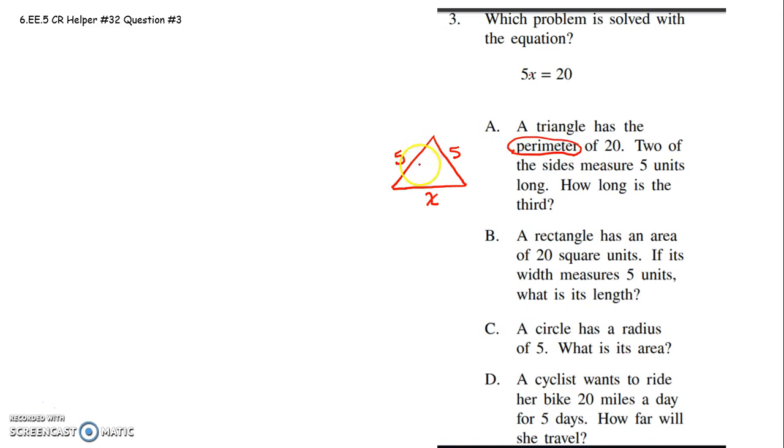Perimeter means you have to add all those together and come up with 20. So for this one, it would be 5 plus 5 plus x equals 20. Or 10 plus x equals 20. Well, that's certainly not what they have here.